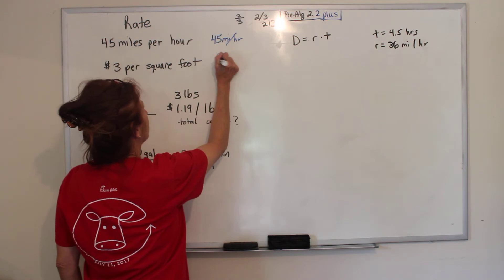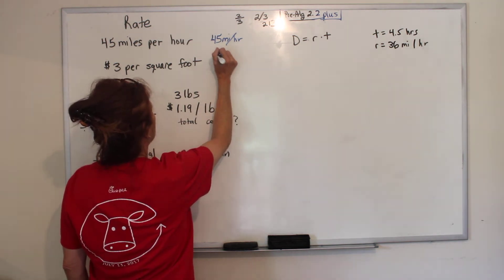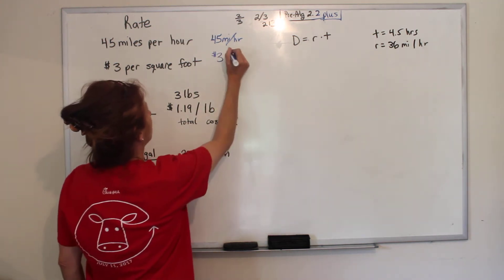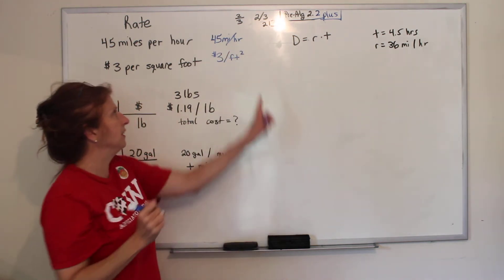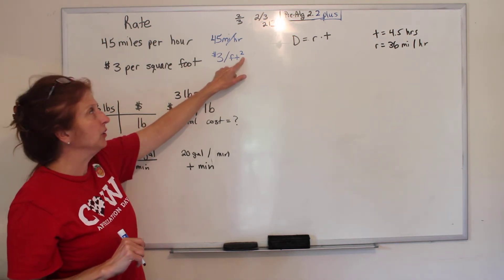Another one is we have $3, and a lot of times with the dollars they put before the three, per feet squared. And the symbol for feet squared is an exponent of 2.